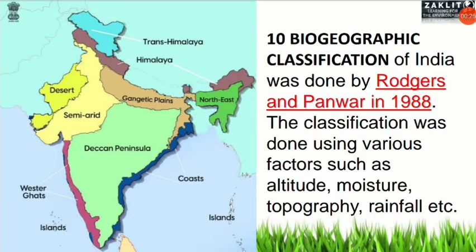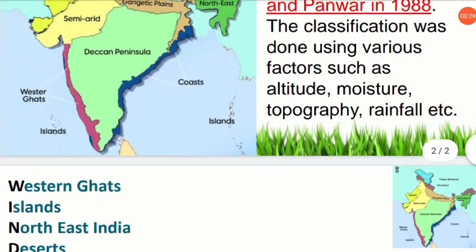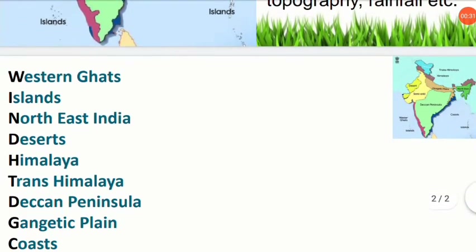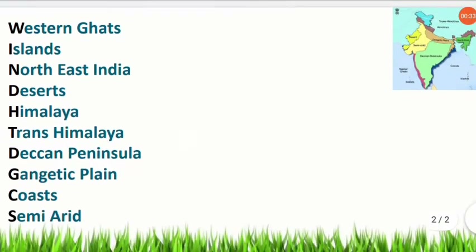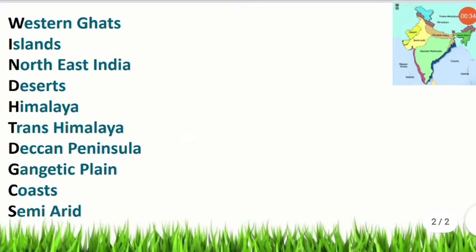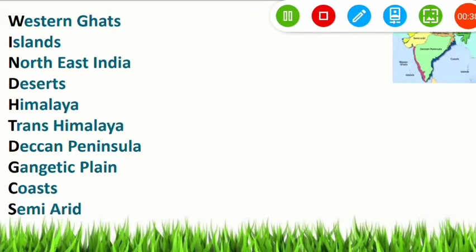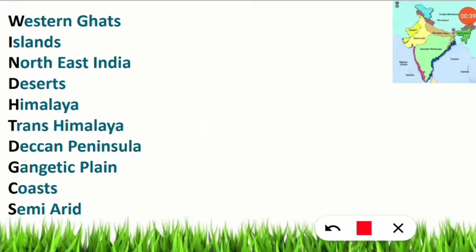Now we will see how to remember all these things, because it is very important. In the NET exam they also ask questions by giving examples to identify whether something belongs to one of the bio-geographical zones. So now we'll learn a mnemonic to remember all ten zones.